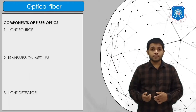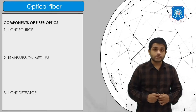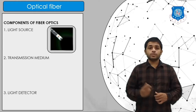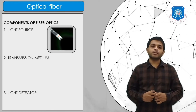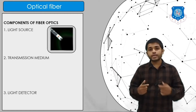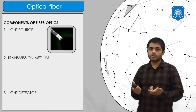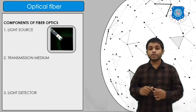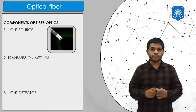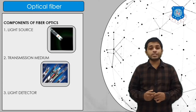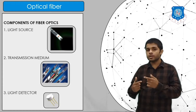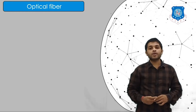In the optical fiber cable there are three main components: the light source, the transmission medium, and the light detector. The light source is a laser. When the sender sends data, the bits are converted into light signals — the laser blinks according to the data rate. Light passes through the glass medium, and the light detector at the receiver converts the light signal back into bits.